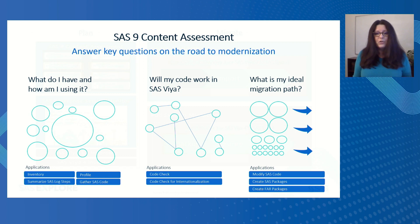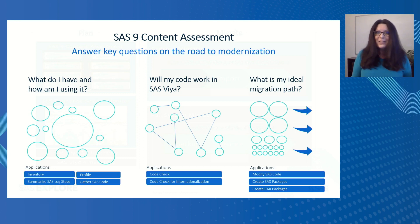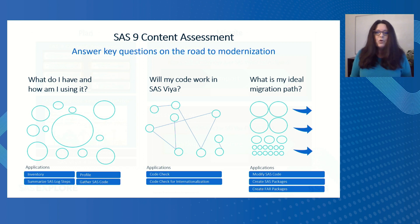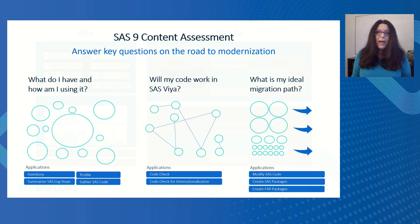Now that you know what you have, how you're using it, and what code will work in SAS Viya, the next question is: what's my ideal migration path? We have some applications to help with this, and we call this guided migration. The first application is Modify SAS Code. Remember when CodeCheck found code that might need attention? Modify SAS Code is going to help automate and fix some of that code, especially those external references. Create SAS Packages is going to help prepare items for transport and migration, and Create FAR Packages does the same thing for forecasting projects.